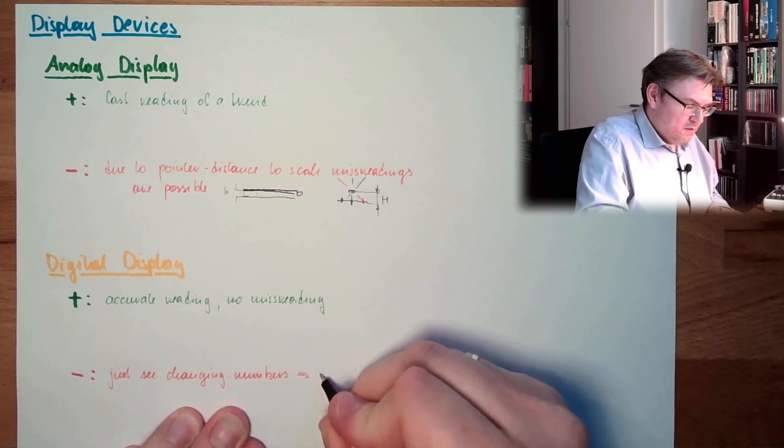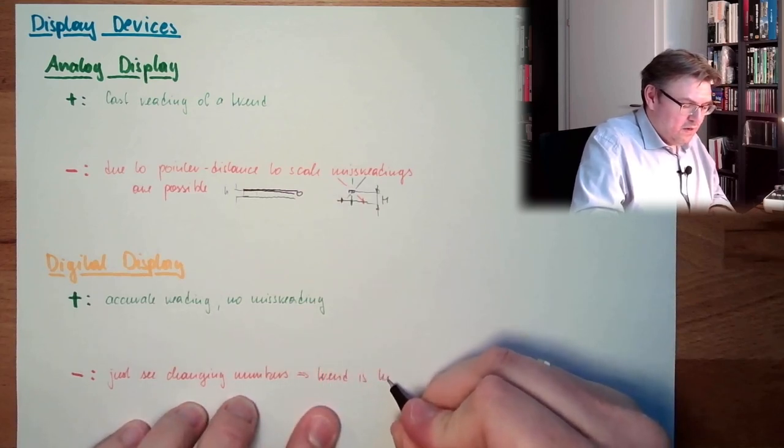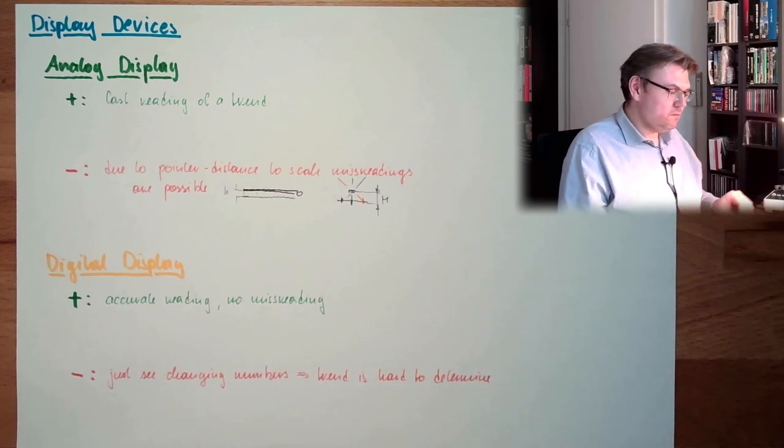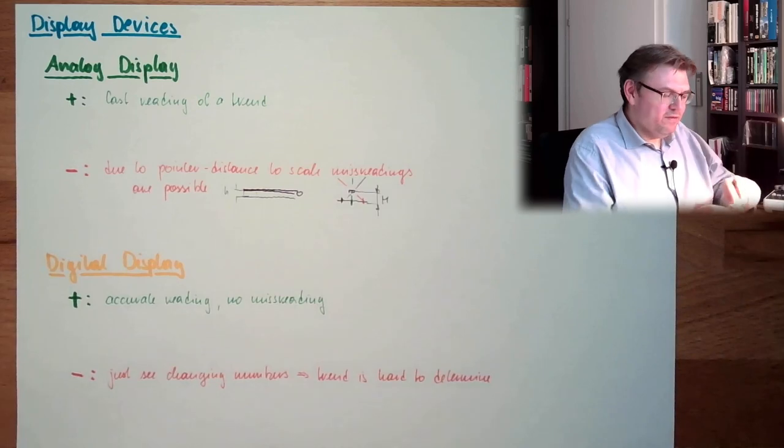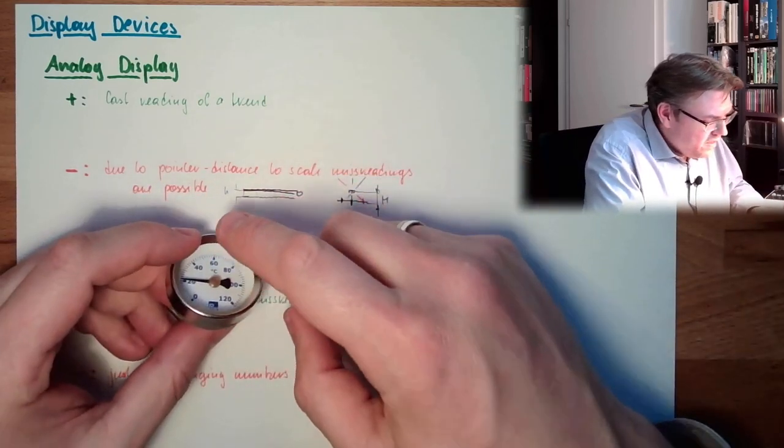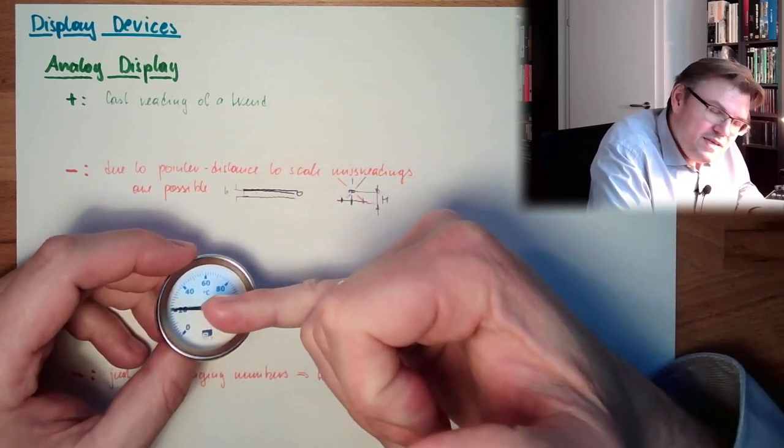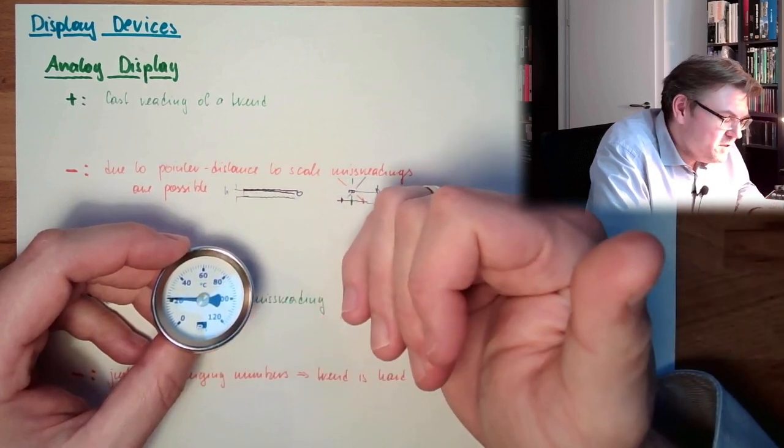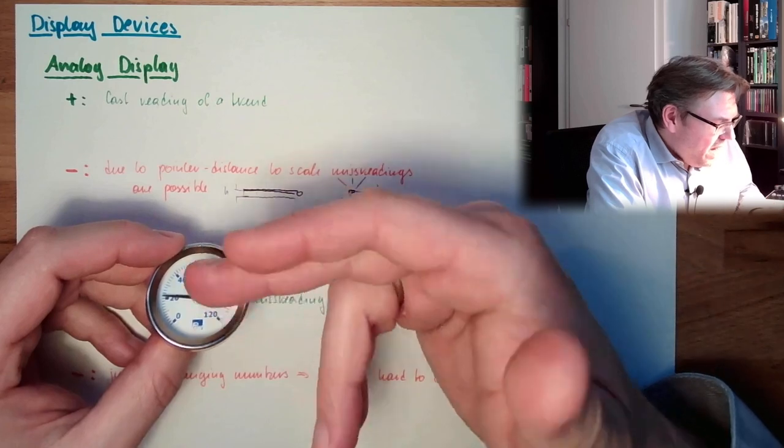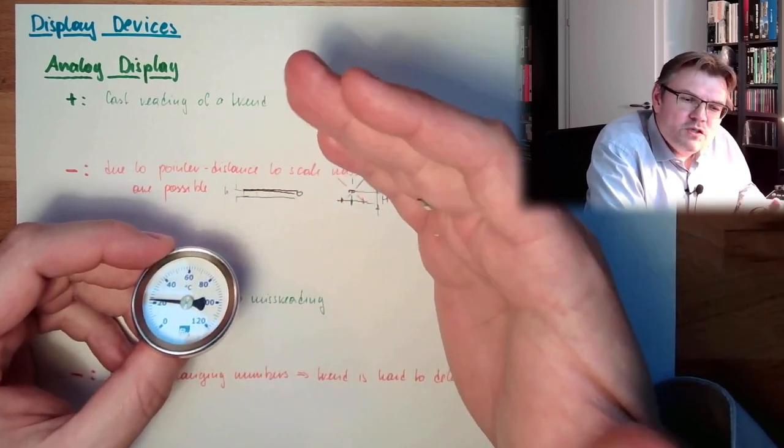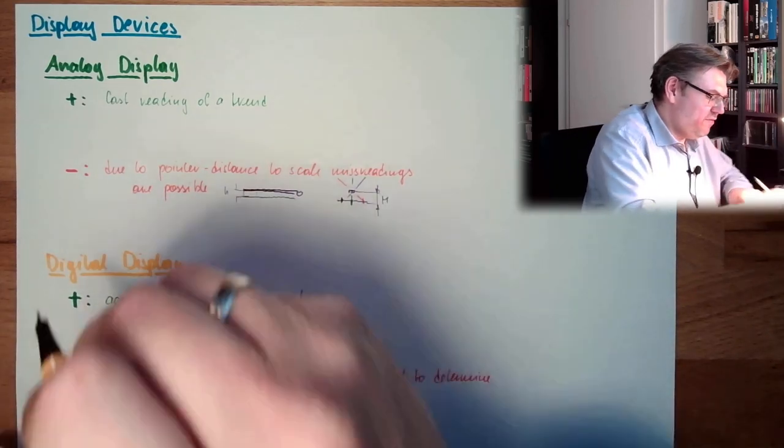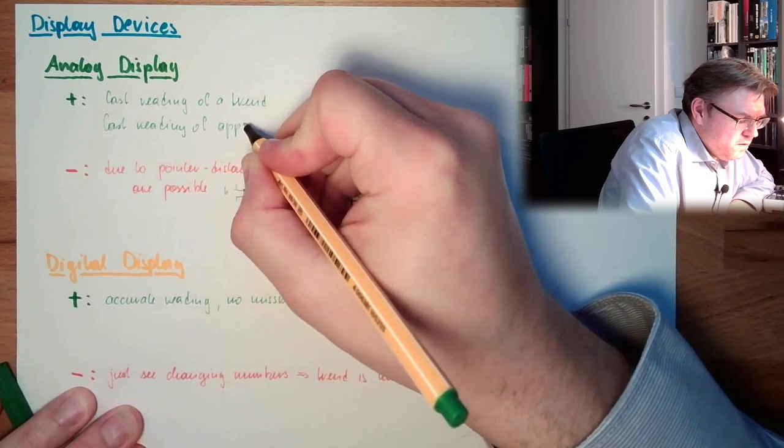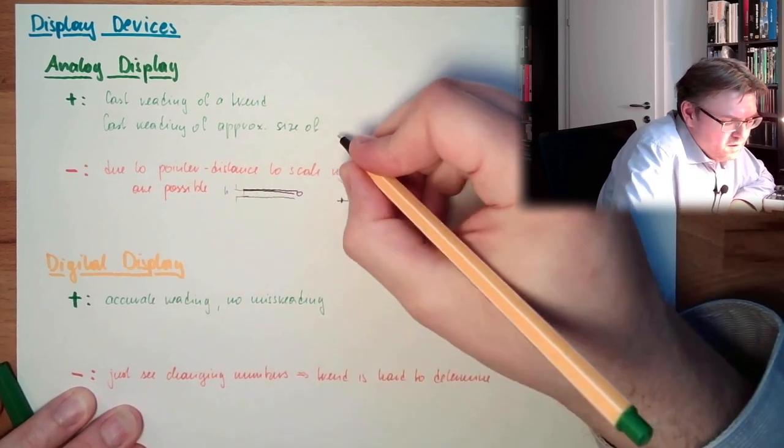Just changing numbers, trend is hard to determine. Then, what also is a benefit of these analog things here. Here, you see, there is the scale, and the scale has a minimum and a maximum value. And I can immediately see in which area the pointer is. If it's somewhere low, if it's in the middle position, if it's high, in the high position.